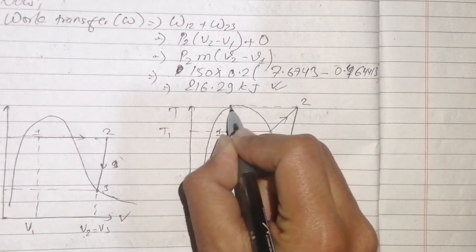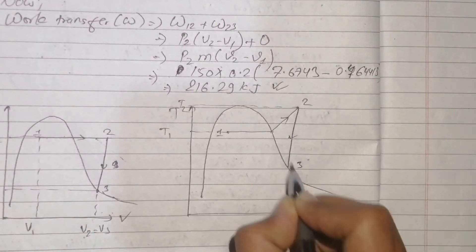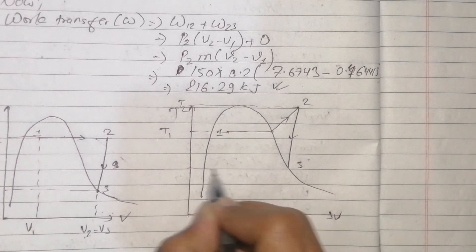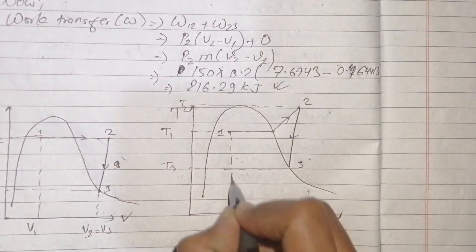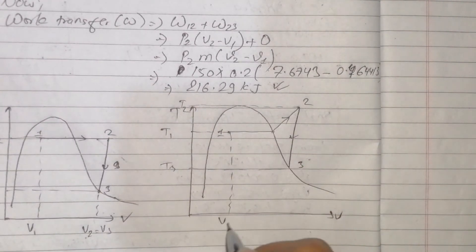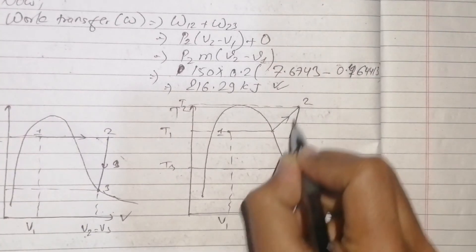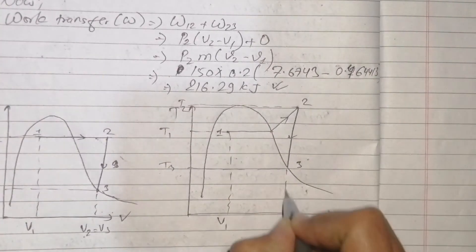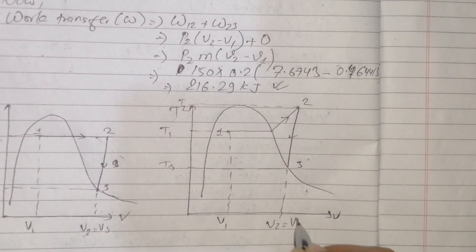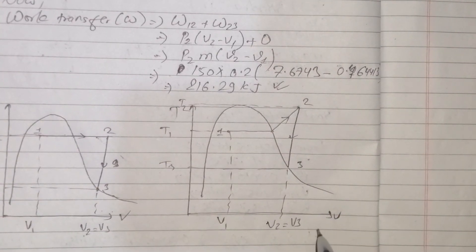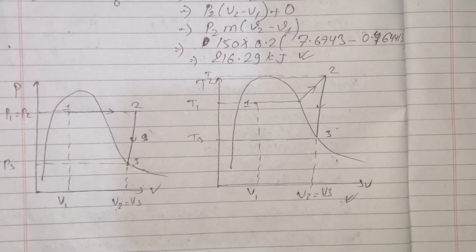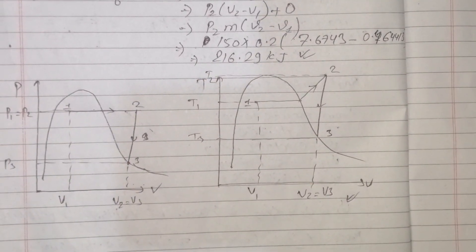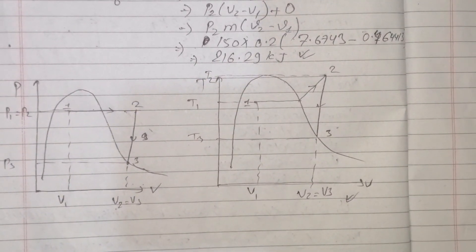On the TV diagram, T2 and T3 are marked. v2 is equal to v3 since it is a constant volume process.